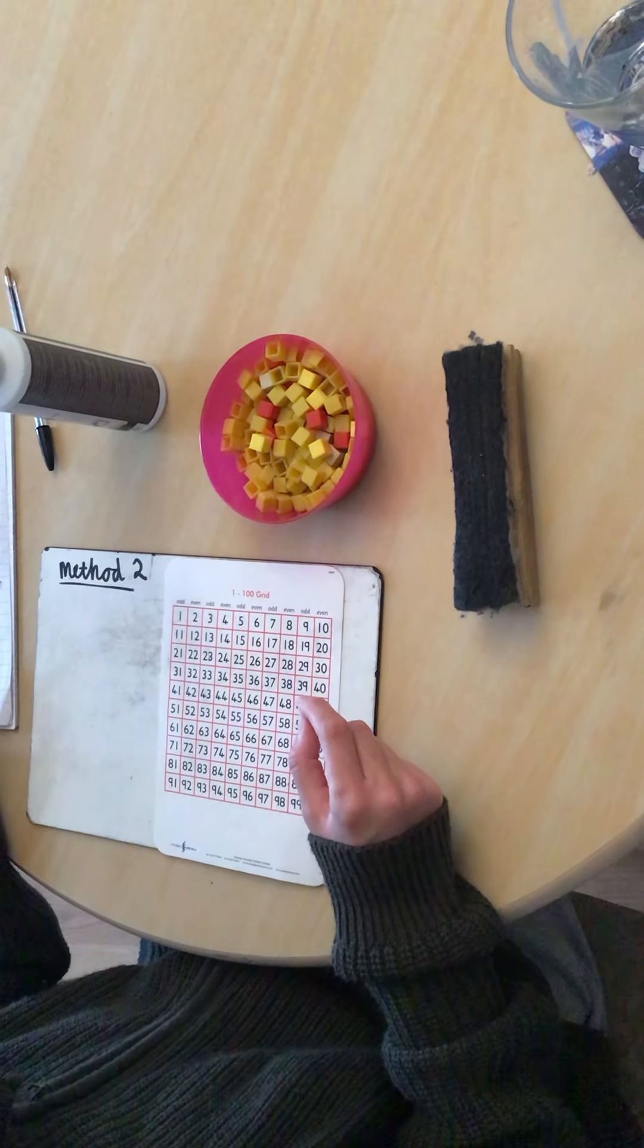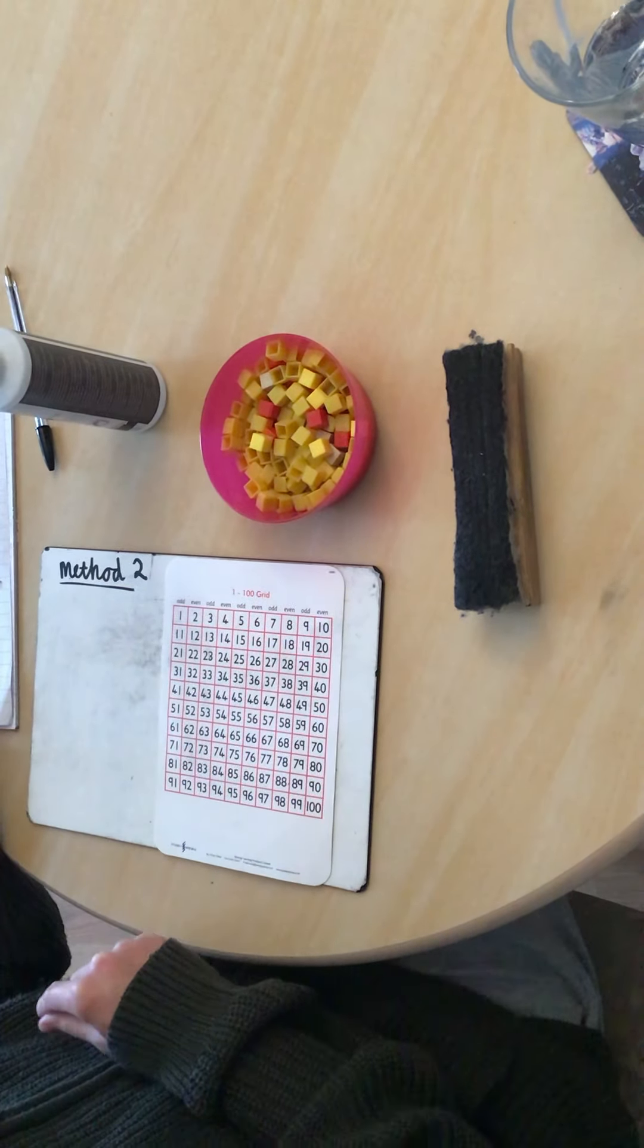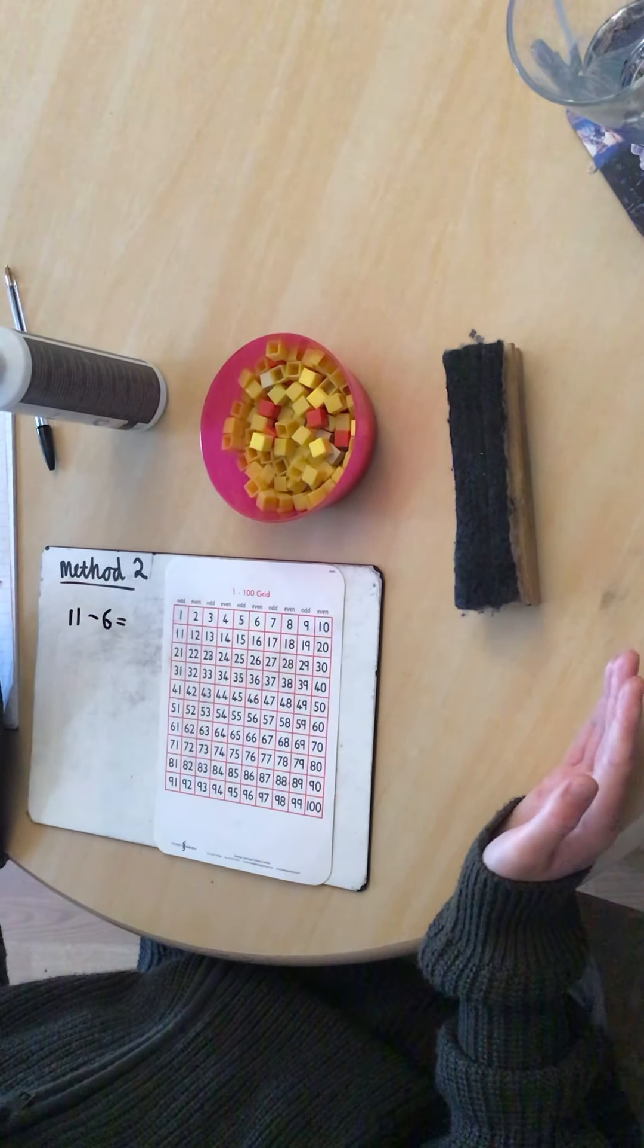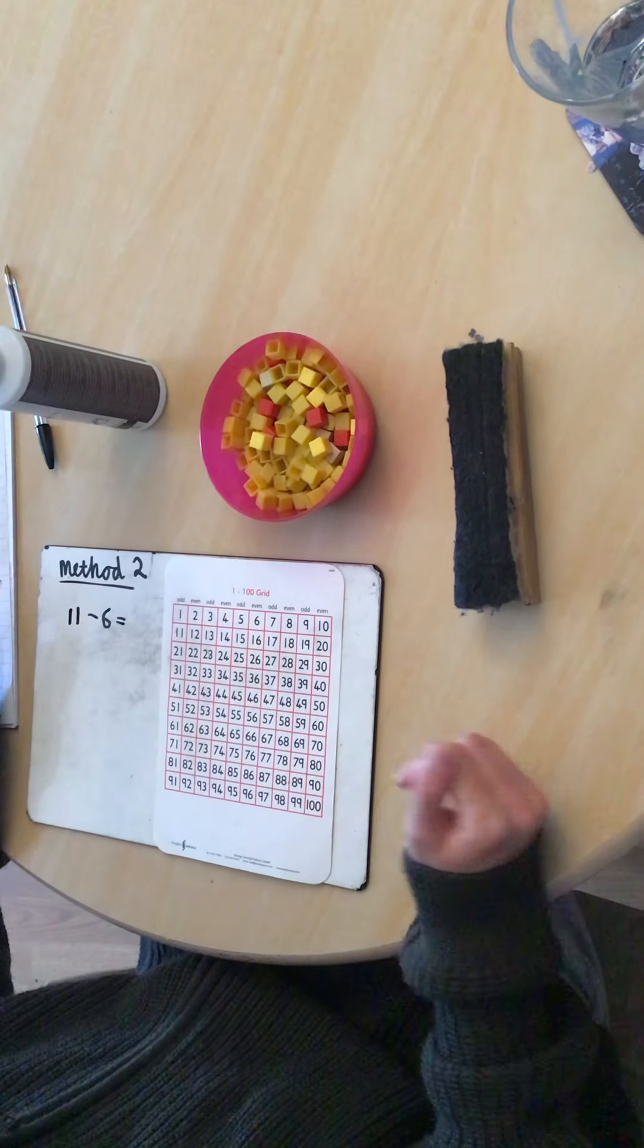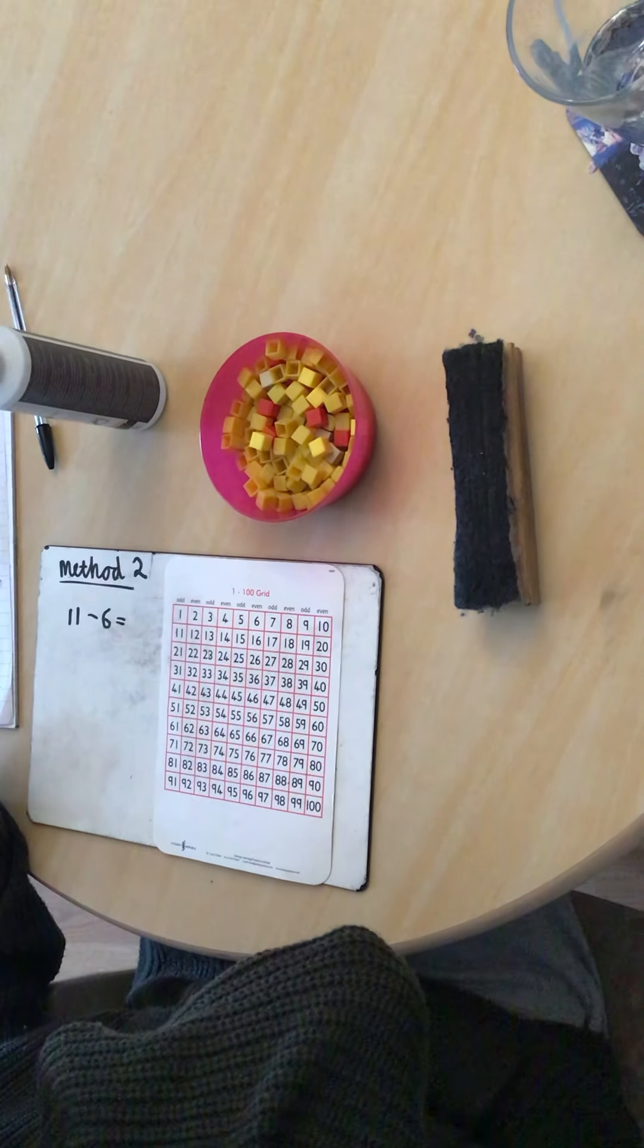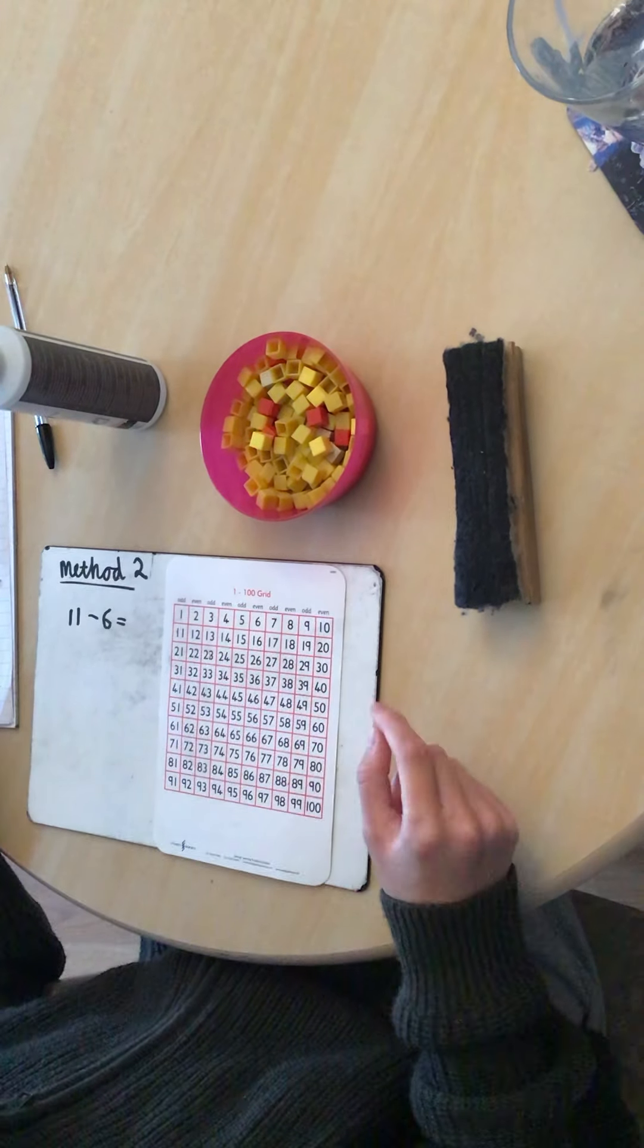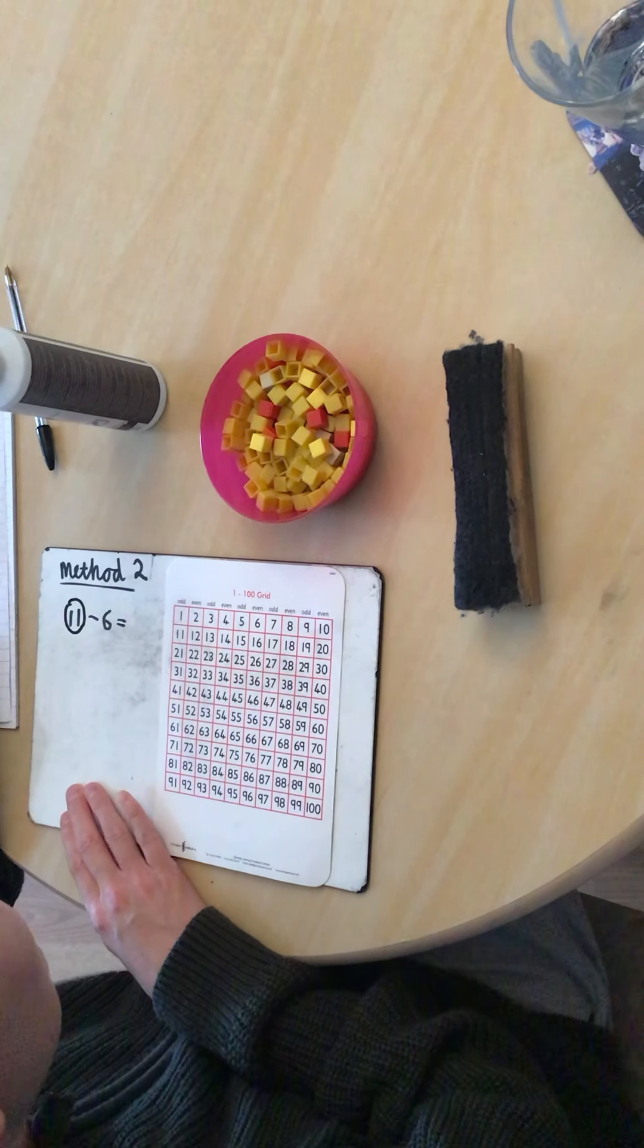Now you can download a hundred square from our school website or you might be able to search one online. Or you could make your own children, that would be a good challenge. So children, we're going to use a hundred square to help us. And it's a good way to start practicing crossing the tens barriers. So for example, if we had 11 take away 6, we know we're going to be crossing the tens barrier. And that can be quite difficult for children, thinking what number comes before that 10. So it's good to have this in front of them so they can have a visual. And they can always think about it in their heads and then they can check.